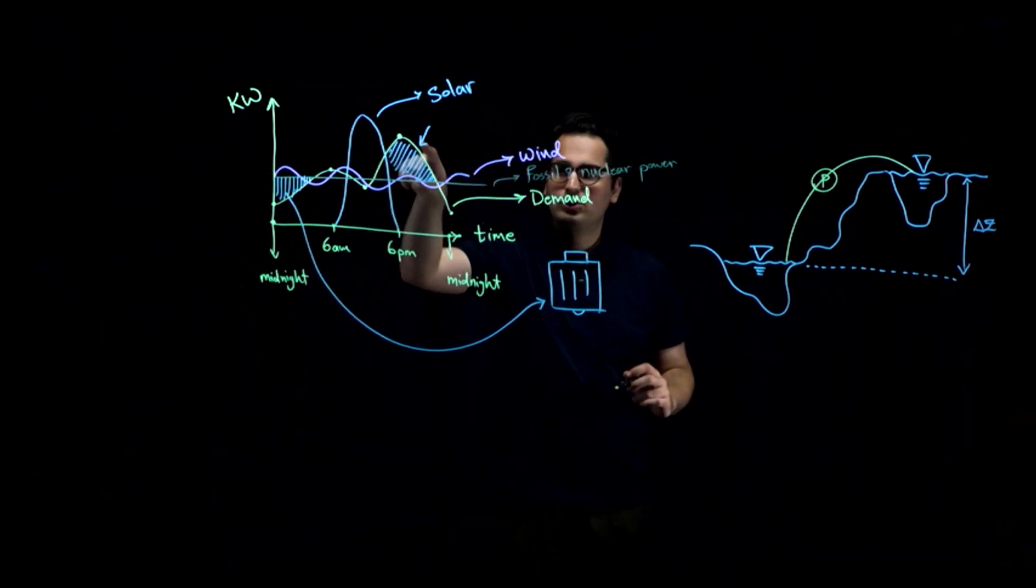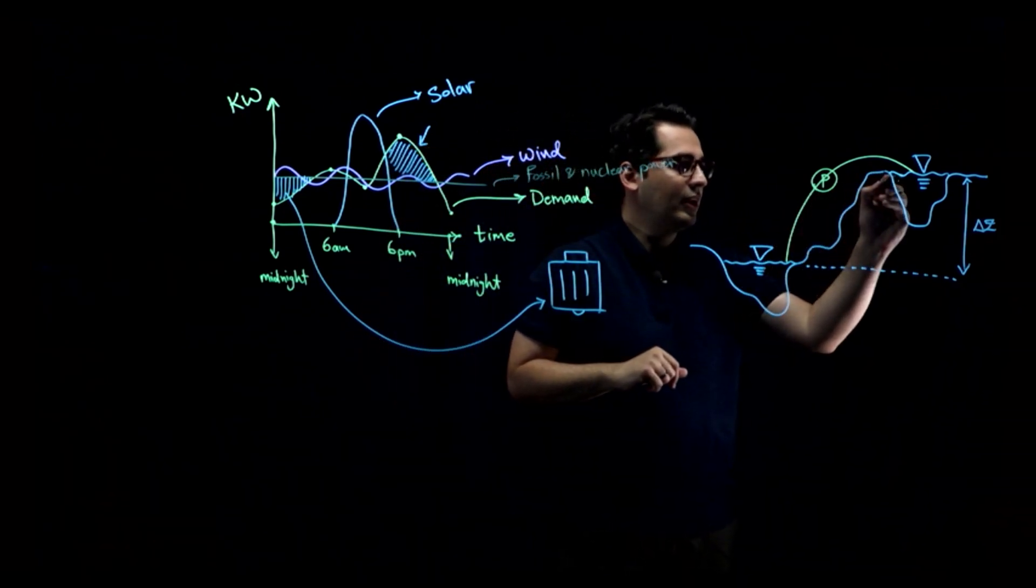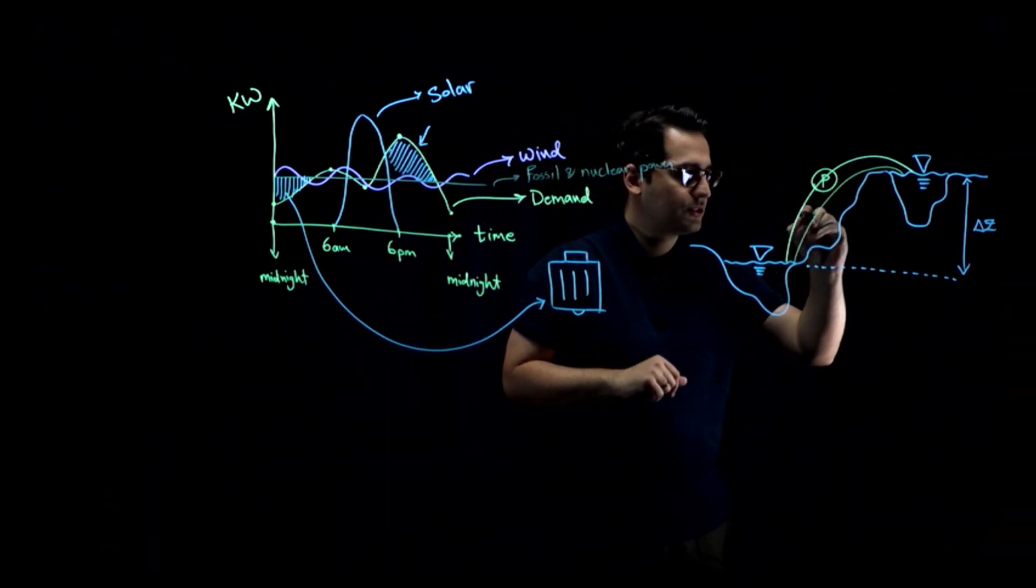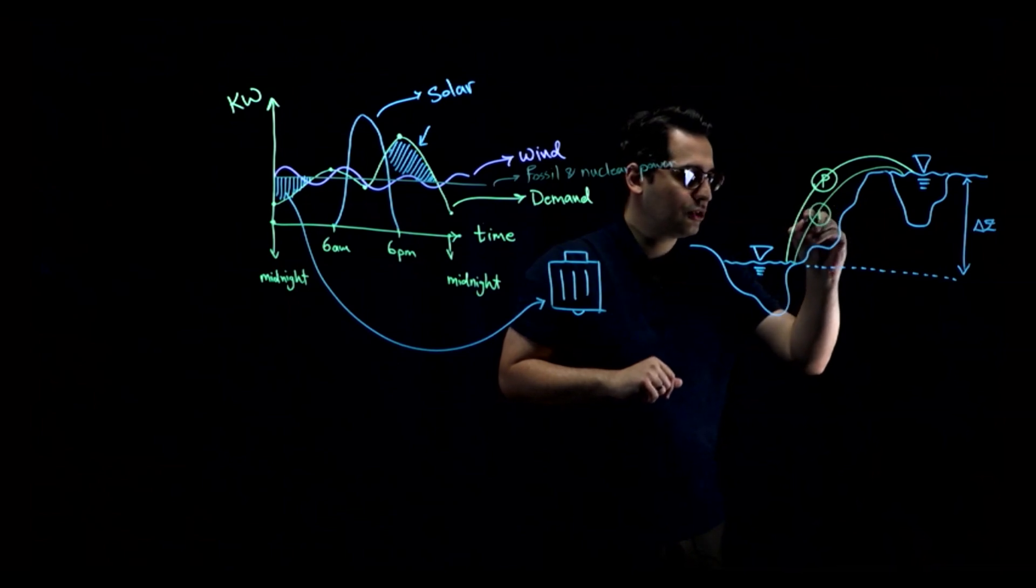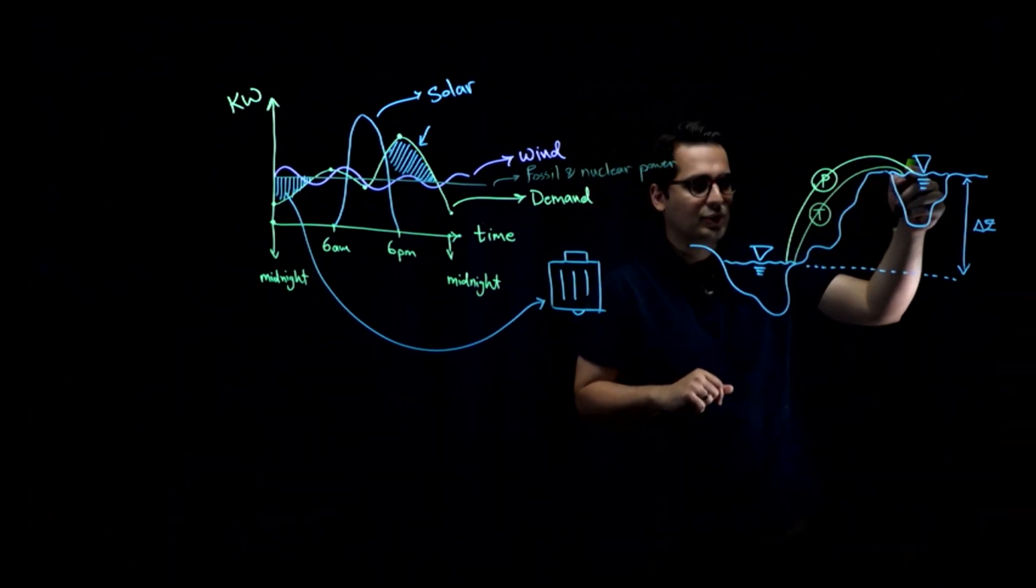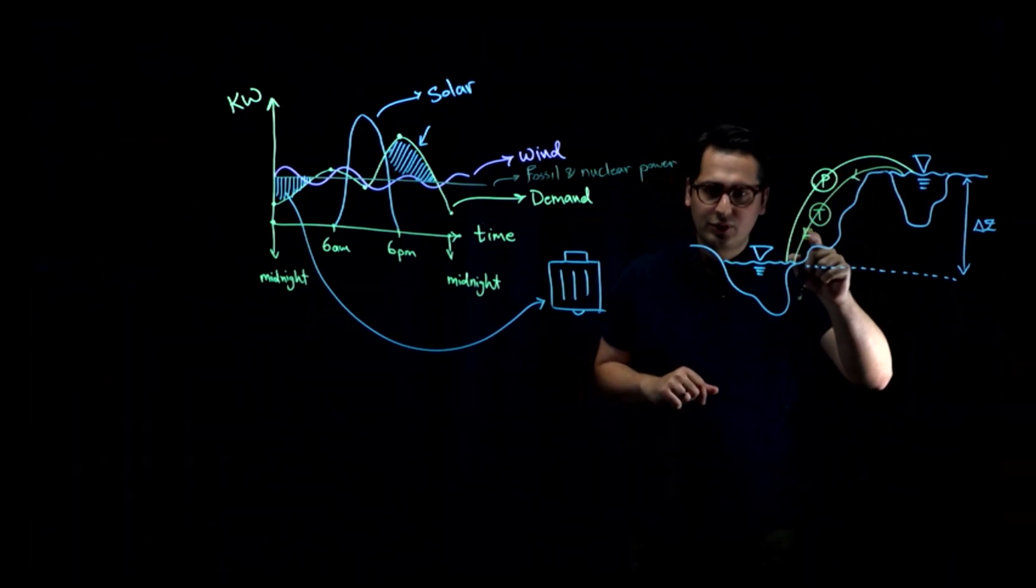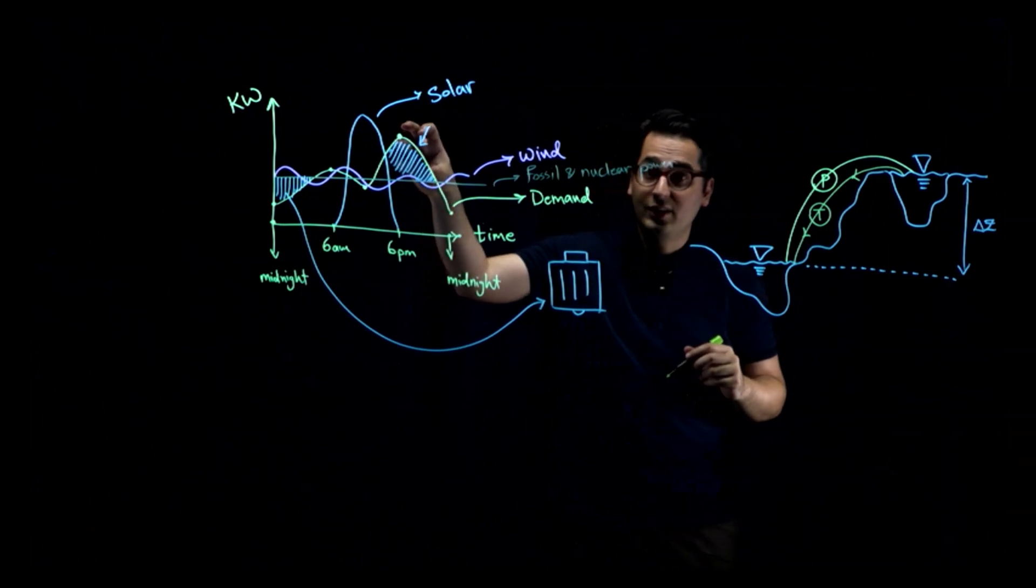And then when you need more electricity in a day, then you are going to have another set of pipes in which they have a turbine in it. And water, by gravity, is going to flow down and create electricity and give you electricity when you need it.